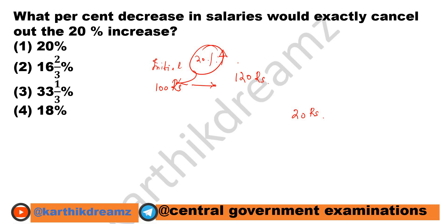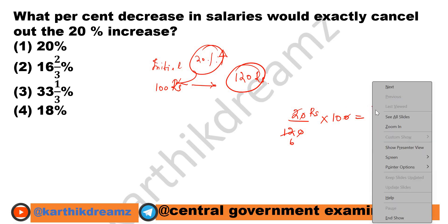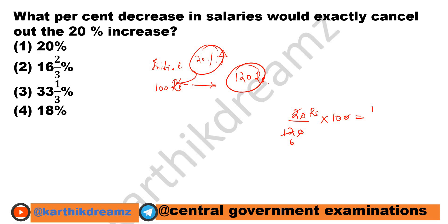Now, the decrease amount would be calculated on 120 rupees. So, 20 divided by 120 into 100, which equals 100 by 6, which is 16 and 2/3 percentage.